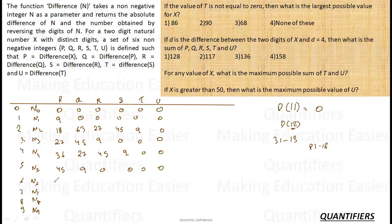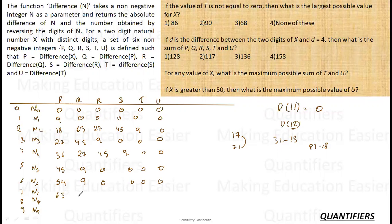For digit difference 6, p = 54. For example, number 17 and reverse 71 — difference is 54. After 54, the next is 9, then 0, 0, 0, 0. For digit difference 7, p = 63. After 63, the series is 27, 45, 9, then 0.